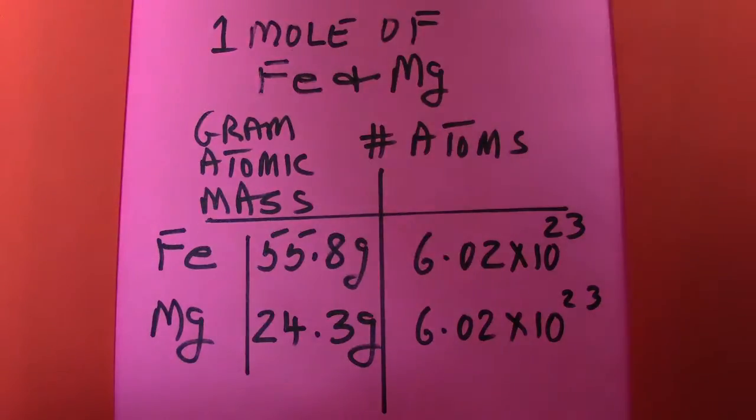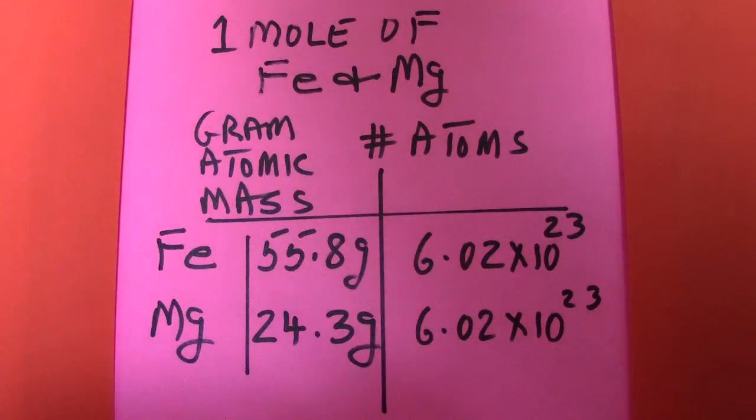Now you know that there is the ideal gas law which is written as PV equals nRT where n is the number of moles, R is the ideal gas constant and T is the temperature in degrees Kelvin.